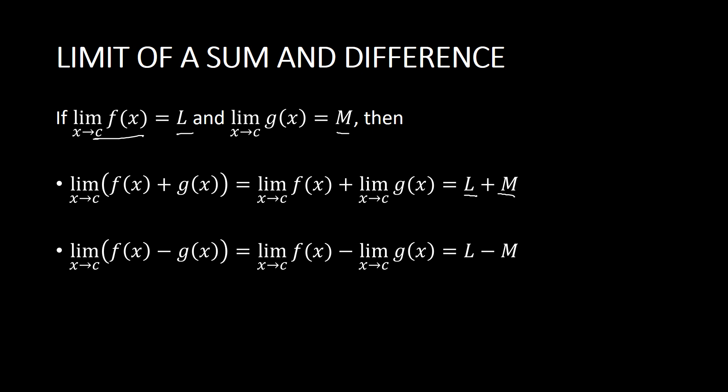For the difference, the limit of f(x) minus g(x) as x approaches c is equivalent to breaking it into the limit of each function and subtracting, based on the placement of the first and second function. Because this is subtraction, you cannot interchange the two. So we have the limit of f(x) as x approaches c minus the limit of g(x) as x approaches c, which equals L minus M.